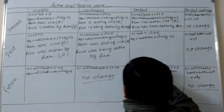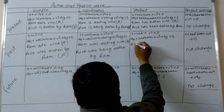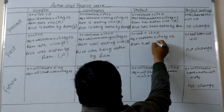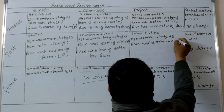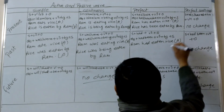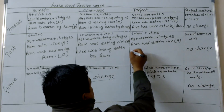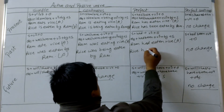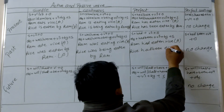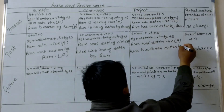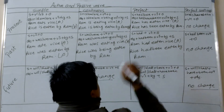In past perfect, Ram had eaten rice. This is active voice. Now we change it to passive voice: rice had been eaten by Ram.